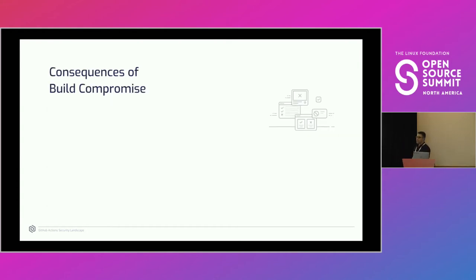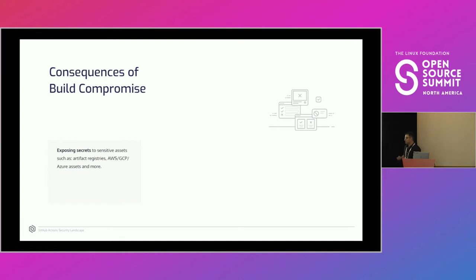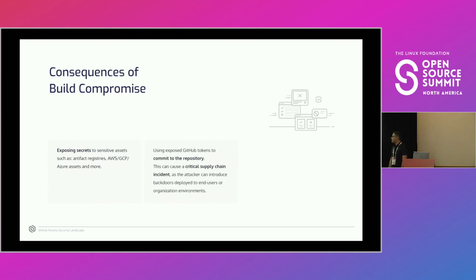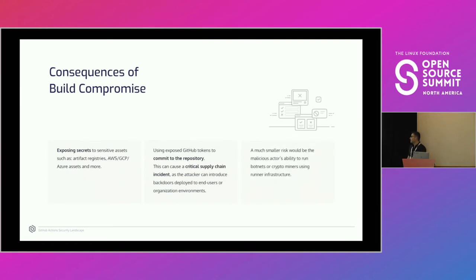So what could be the consequences of this build compromise? We could expose secrets — which could contain sensitive assets like AWS tokens, GCP, Azure tokens, Docker Hub, JFrog credentials, and so on. We could expose GitHub tokens to commit back to the repository and potentially introduce malicious code — maybe a backdoor deployed to end-user organization environments — resulting in a supply chain attack. A smaller but real risk would be running botnets or crypto miners on the runner infrastructure.